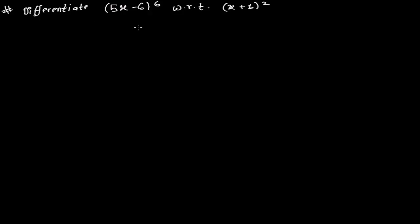We have already learned the quick method as well as the formal process of finding the derivative of one function with respect to another function. With the quick method, you just find the derivative of this quantity and divide it by the other quantity with respect to which you are differentiating. So the derivative of this quantity — just write it right there and then divide by this.